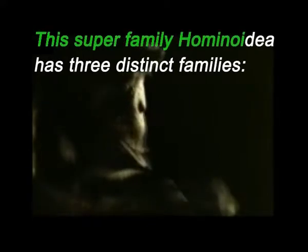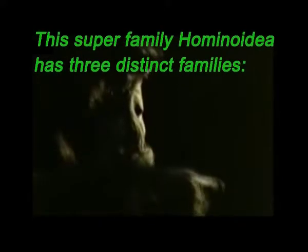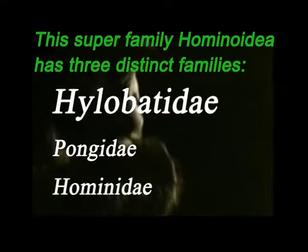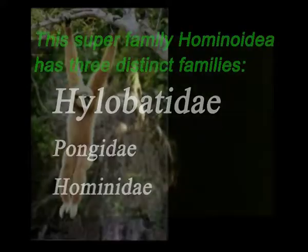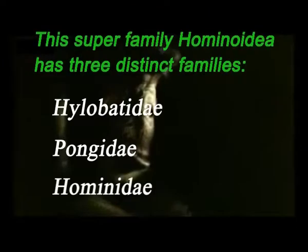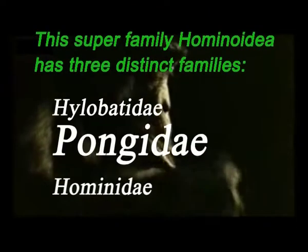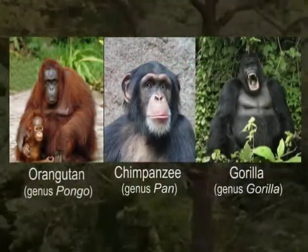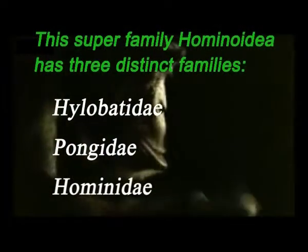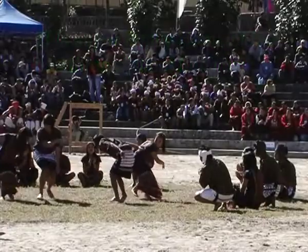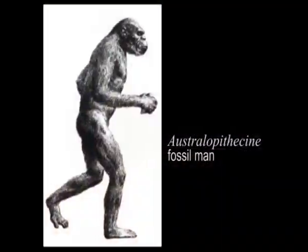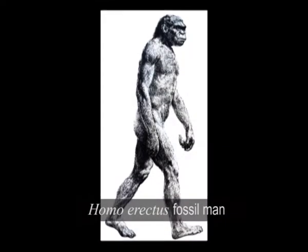This super family Hominoidea has three distinct families: Hylobatidae, Pongidae, and Hominidae. Hylobatidae is represented by the gibbon and siamang. Pongidae is represented by the three great apes — orangutan, chimpanzee, and gorilla. Hominidae is represented by modern human beings and our immediate ancestors, that is, the Australopithecine fossil man and Homo erectus fossil man.